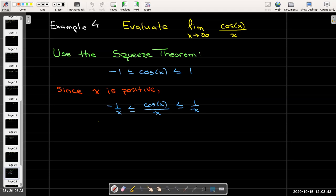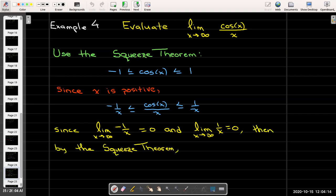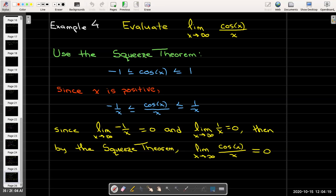So now I have -1/x ≤ cos(x)/x ≤ 1/x and I see that my target function is in the middle. I know that the limit as x approaches infinity of -1/x equals 0 and the limit as x approaches infinity of 1/x equals 0. So by the squeeze theorem the limit as x approaches infinity of the middle function must also be 0.